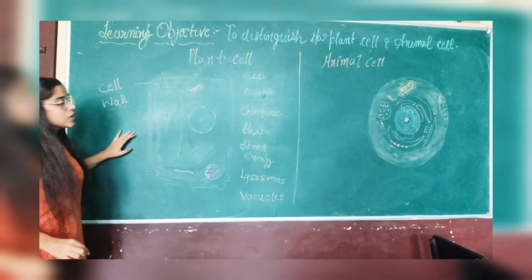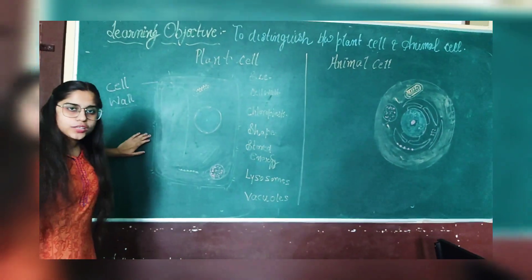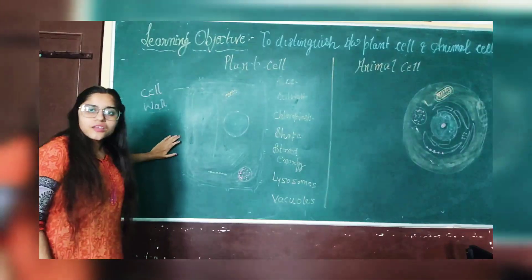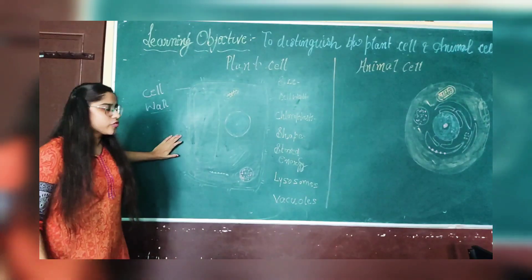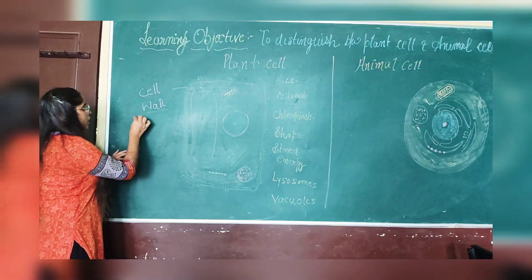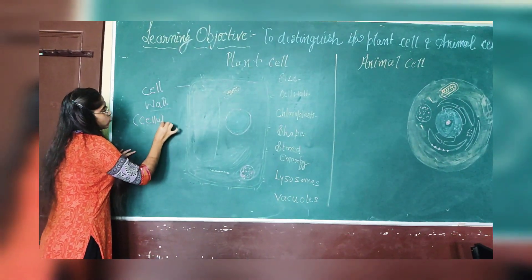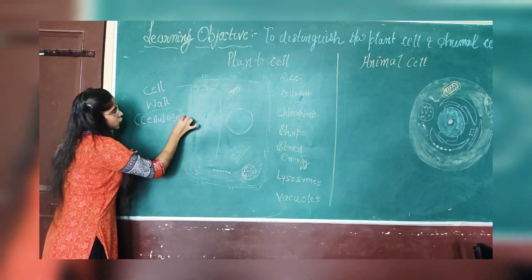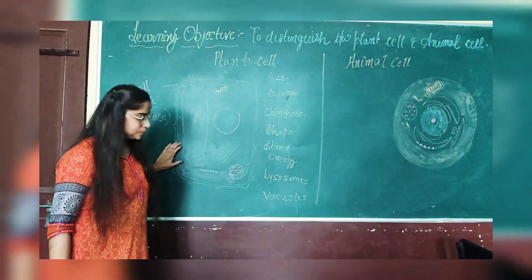This is the cell wall. Cell wall represents the outer covering of the cell and it is made up of cellulose. Cellulose is a carbohydrate material which provides rigidity to the cell wall.